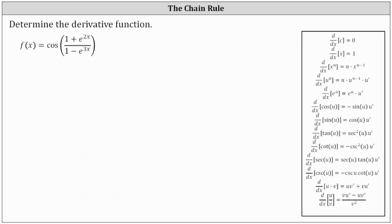We're asked to determine the derivative function given f of x equals cosine of the quotient of one plus e to the two x and one minus e to the three x. Notice how we have a composite function and therefore we'll have to apply the chain rule to find the derivative. Also notice how the inner function is a quotient function and therefore we'll let u equal the quotient function.